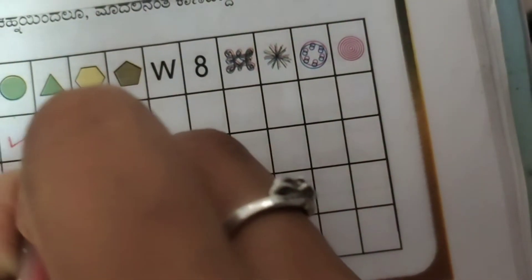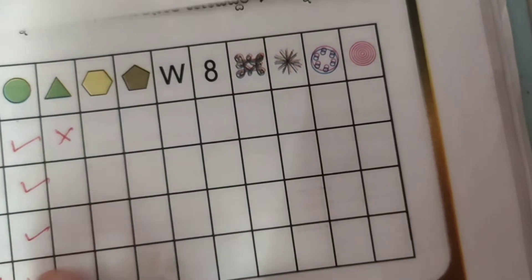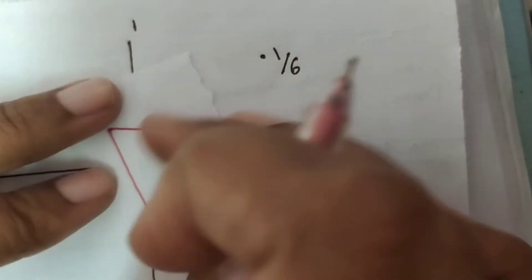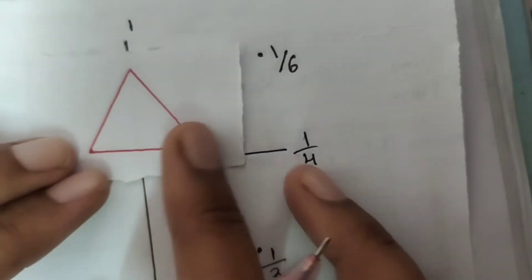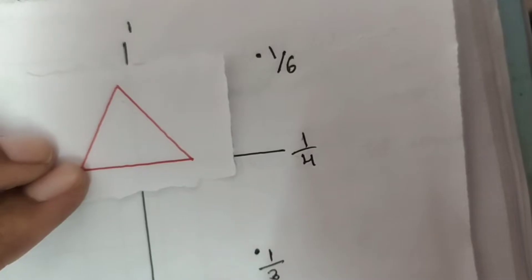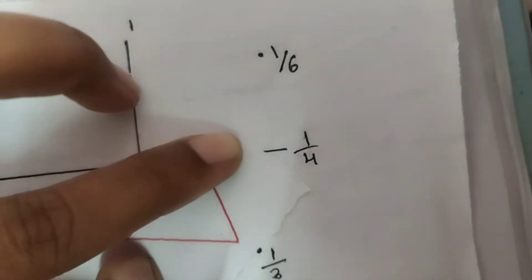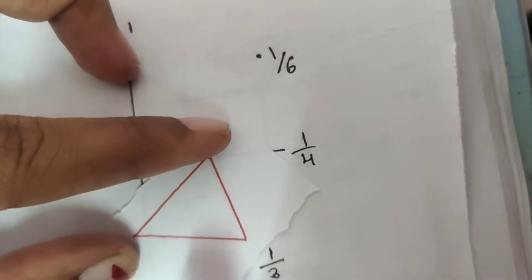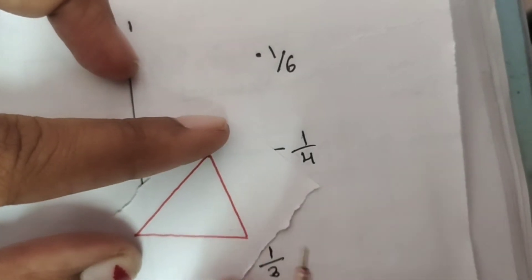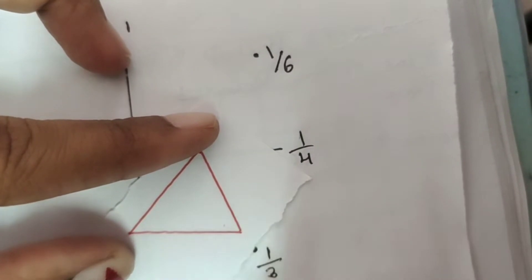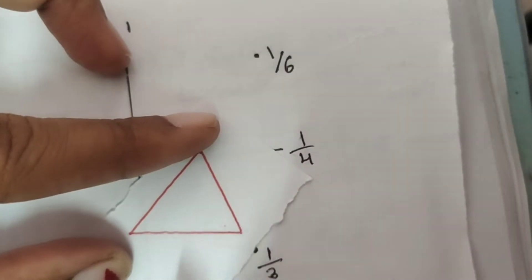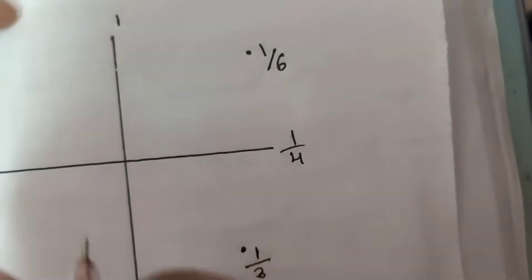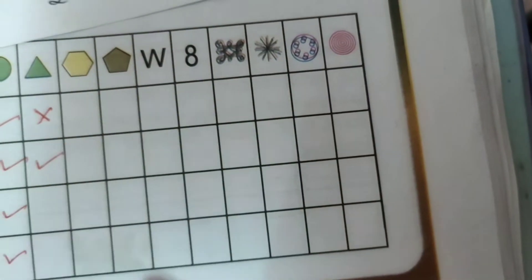First one is wrong. Next 1 by 3 — base is 1 by 3 rotation, so this is the original shape — circle shape, original triangle shape — so second one is right. Next 1 by 4.